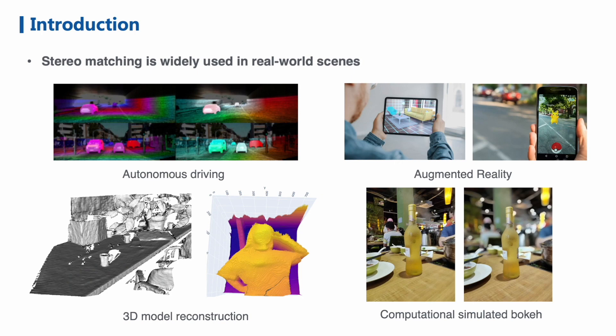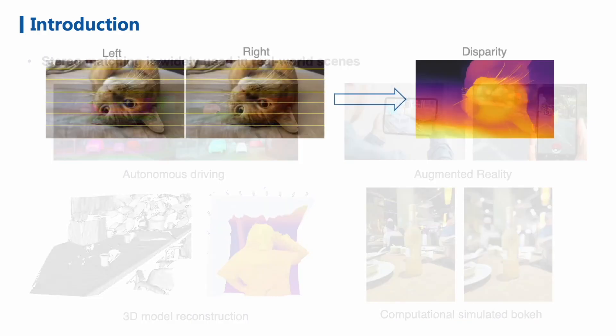Stereo matching is a classical research topic of computer vision, and it has a wide range of applications in the real world, including autonomous driving, augmented reality, 3D model reconstruction, simulated bokeh rendering on smartphones, and so on.